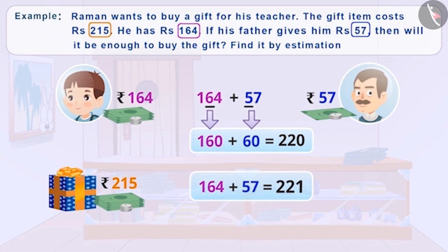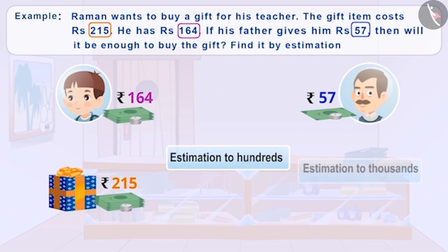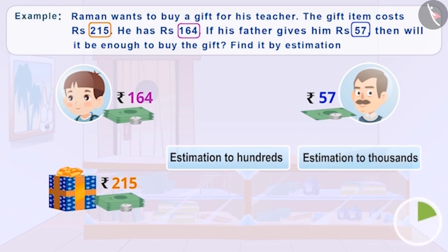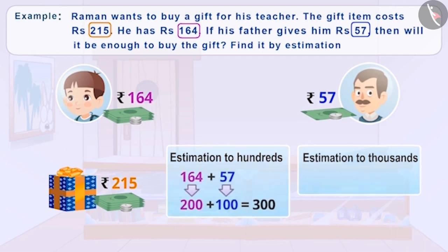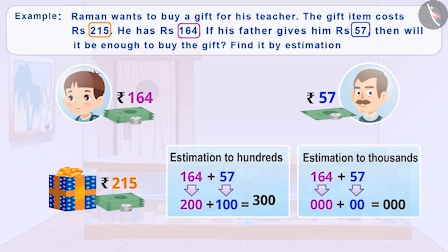Since the outcome is close to the actual result, it is meaningful and accurate. So, can we estimate these numbers to the nearest hundreds and thousands? Think about it. The result won't be accurate with estimation to hundreds and thousands.